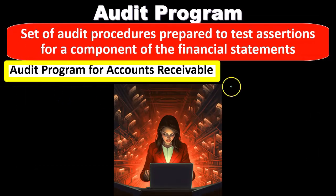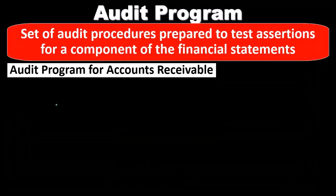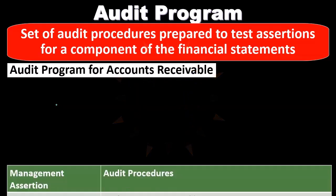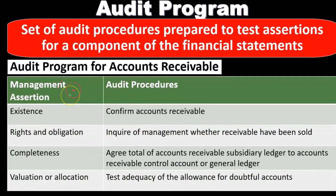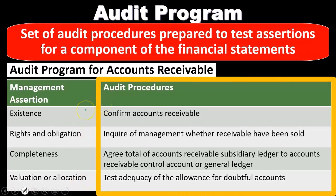As a specific example, consider an audit program for accounts receivable. We're looking at the account of accounts receivable and asking how we can put together an audit program consisting of tests of assertions. The management assertions with regards to accounts receivable are: existence — are the accounts receivable actually there; rights and obligations — do we own the accounts receivable, or have they been sold; and completeness — are the accounts receivable recorded completely.